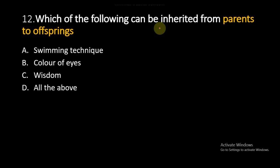Option A: Swimming technique, Option B: Color of eyes, Option C: Wisdom, Option D: All the above. Hereditary characteristics only pass on from parents to offspring, but not the characteristics which are acquired during their lifetime. So option A — swimming technique — is a technique acquired during one's lifetime and is not inherited from parent to offspring.